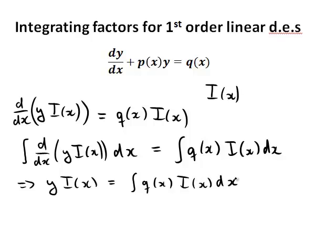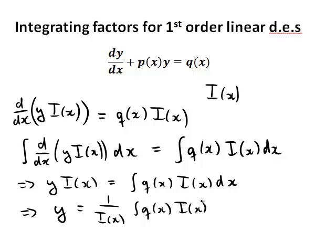That equals the integral of q(x)·i(x) dx. Now, if we want to find y, we simply divide both sides by i(x). So y would be 1 over i(x) times the integral of q(x)·i(x) dx. So what we have to do to find y is integrate q(x) times i(x), divide by i(x), and that's our solution.